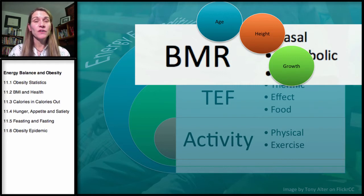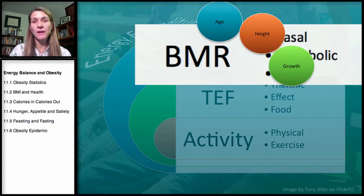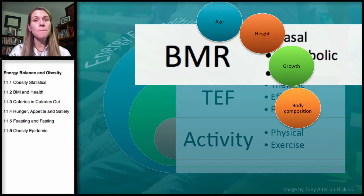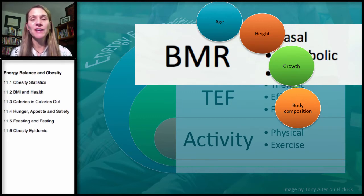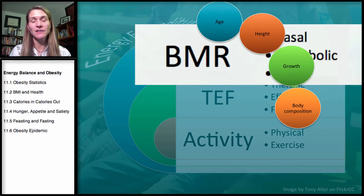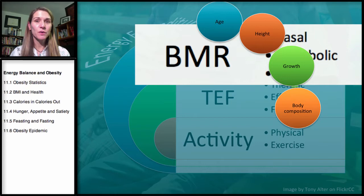Growth — whether during pregnancy, childhood, or building muscle through weight lifting — increases energy expenditure because more tissue needs to be developed. Body composition also matters: greater lean muscle mass is correlated with greater energy expenditure, because for every pound of muscle it takes more energy to maintain at rest compared to fat. Fat is metabolically active, but not nearly as much as muscle. So the more muscle you have, the more calories you burn at rest.